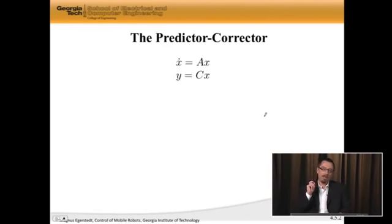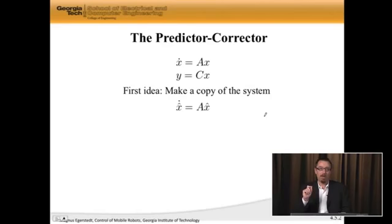Well, here is the idea. The first thing we're going to do is make a copy of this system. And our estimator is going to be this copy. So I'm going to have x hat dot is equal to A x hat.